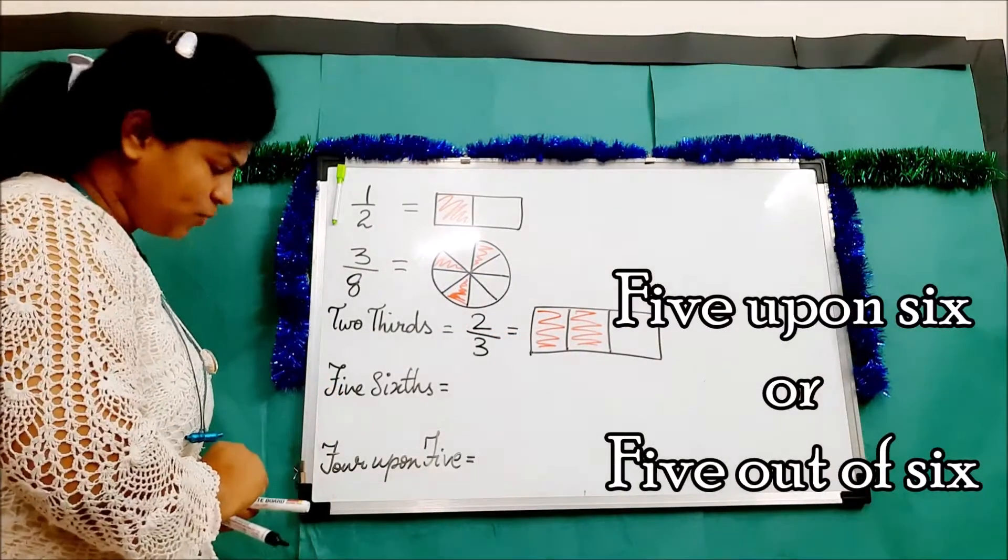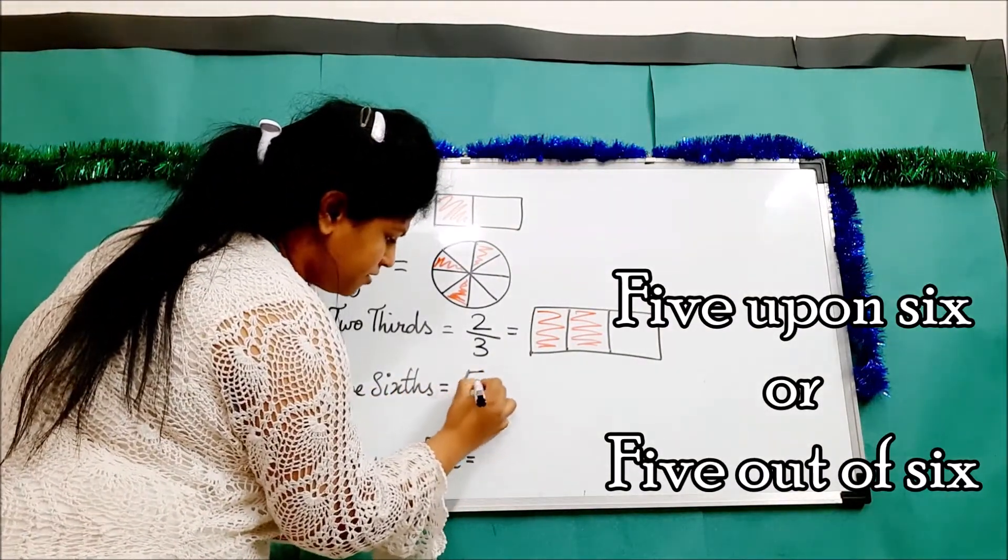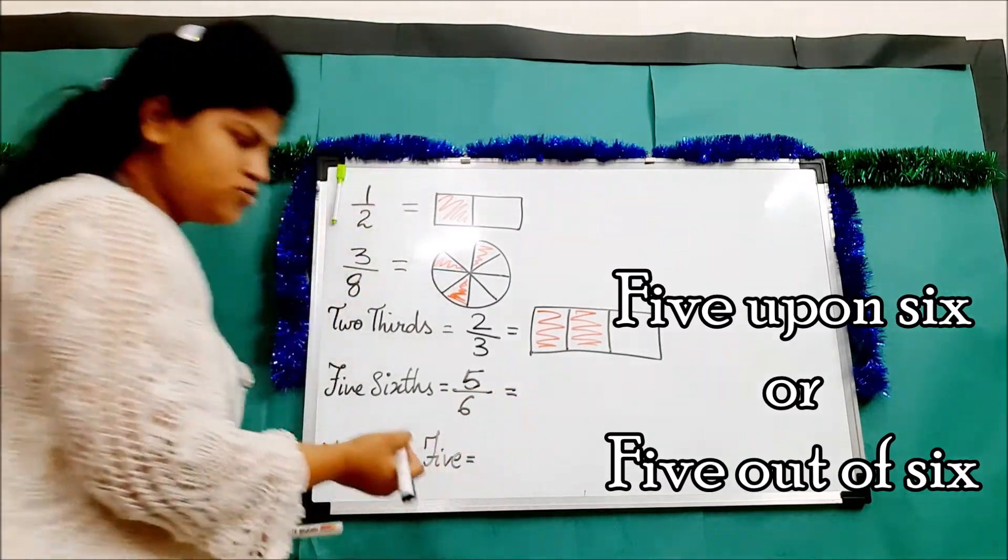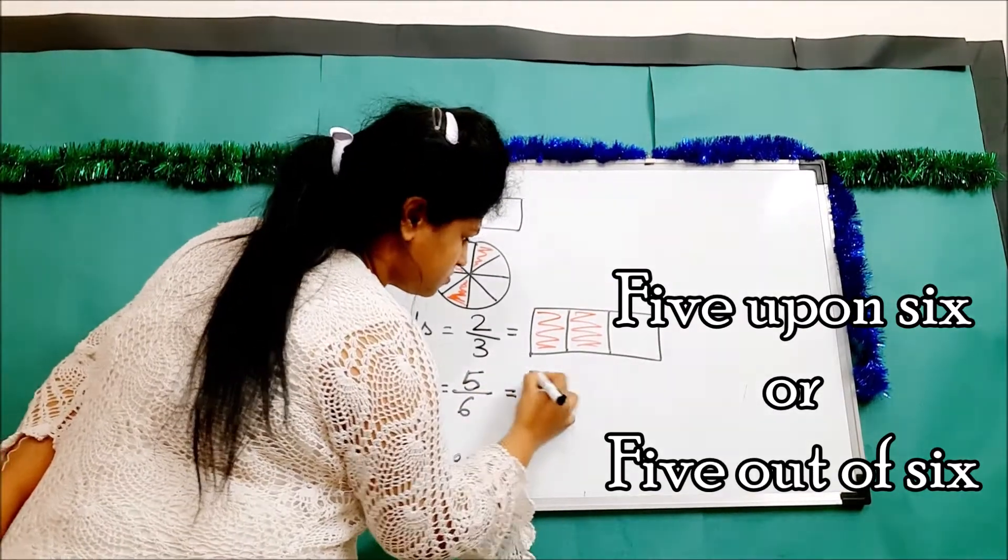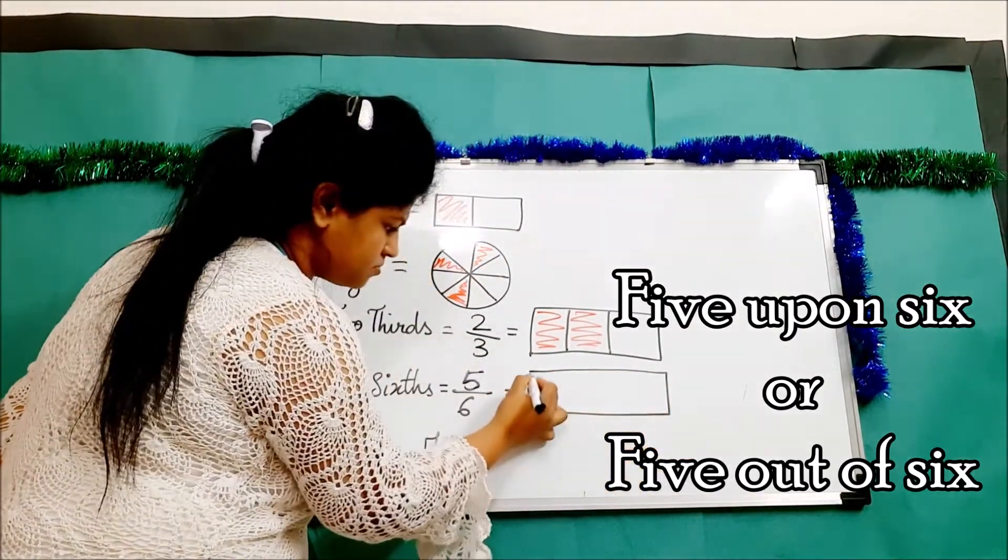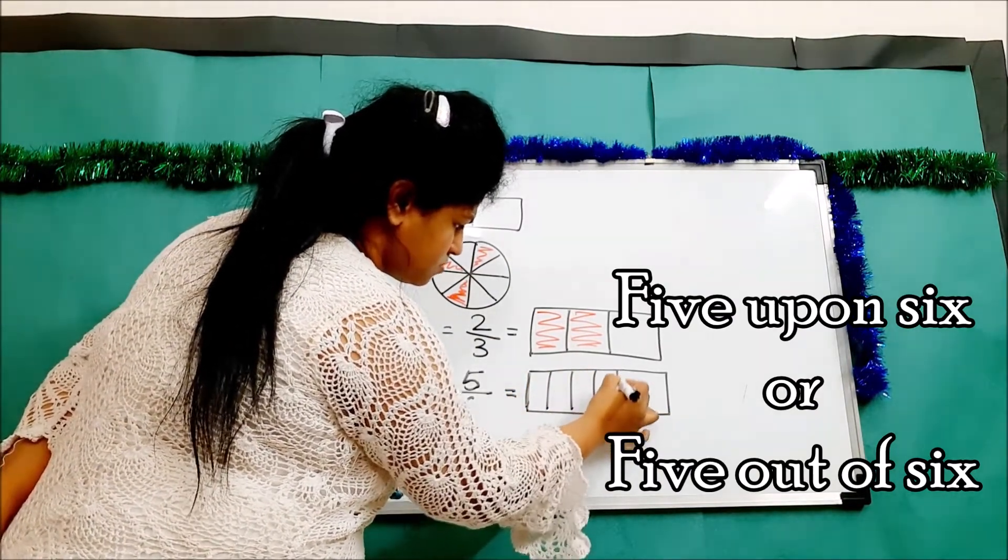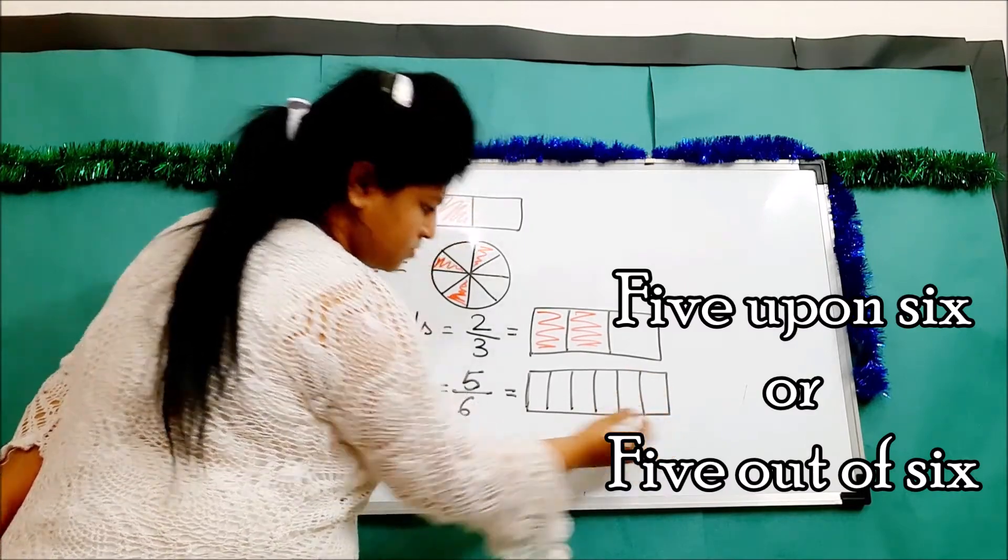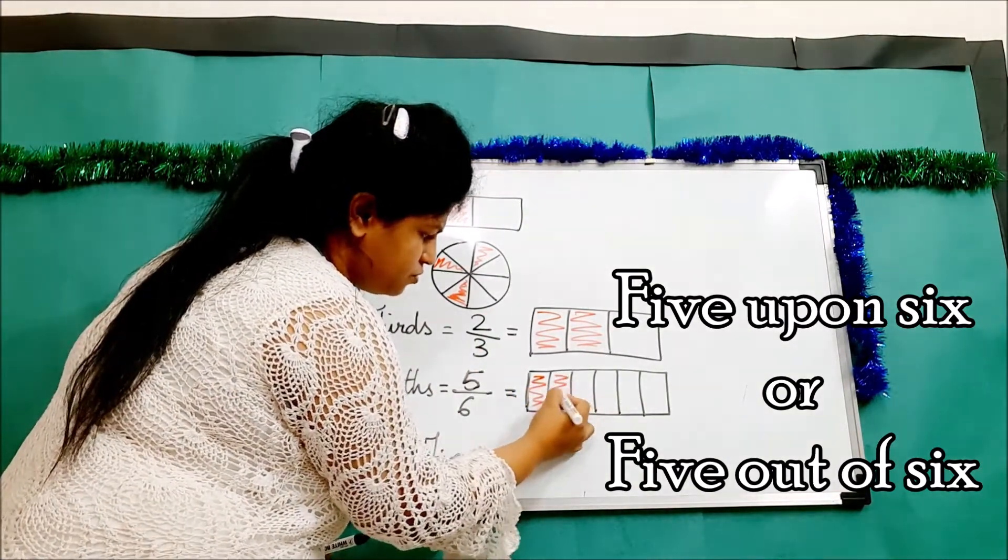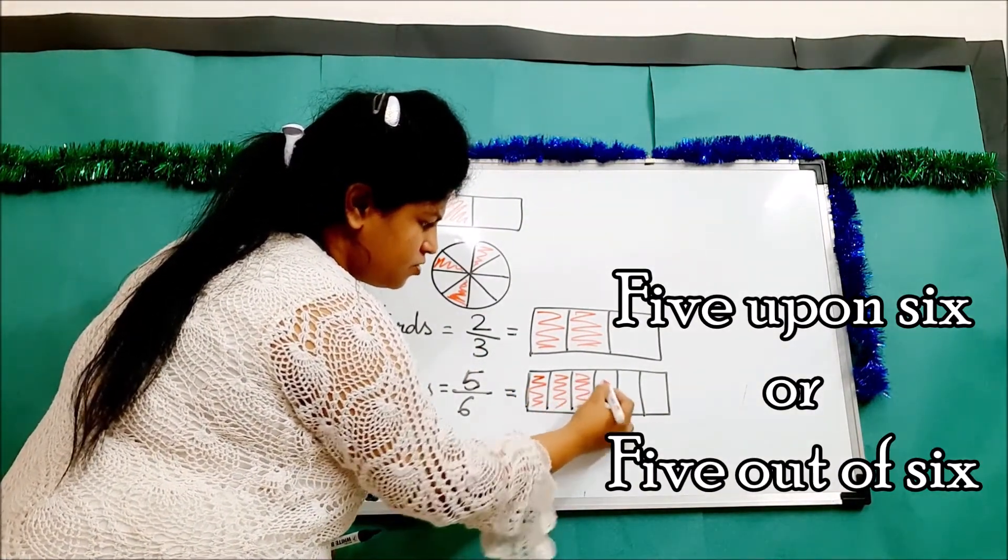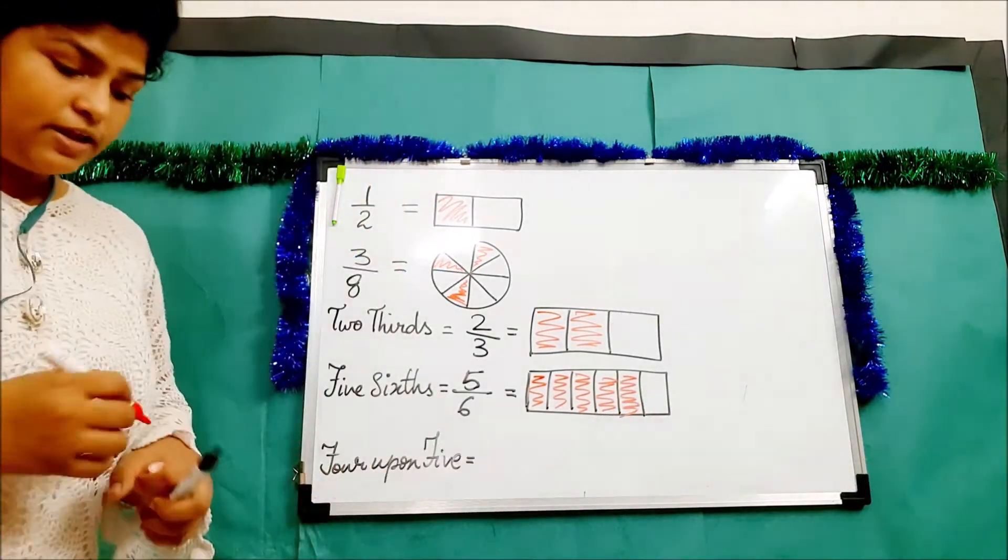Let's go to the next one - five sixths. How will I make five upon six? I will make six boxes and I will shade five: one, two, three, four, and five.